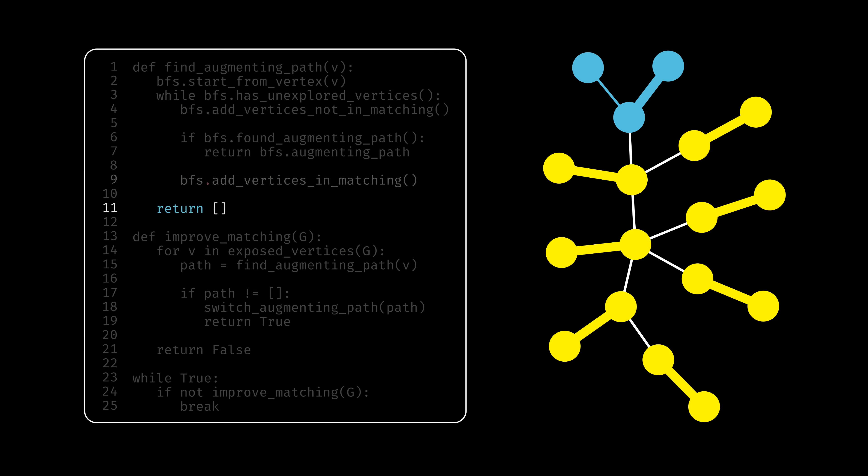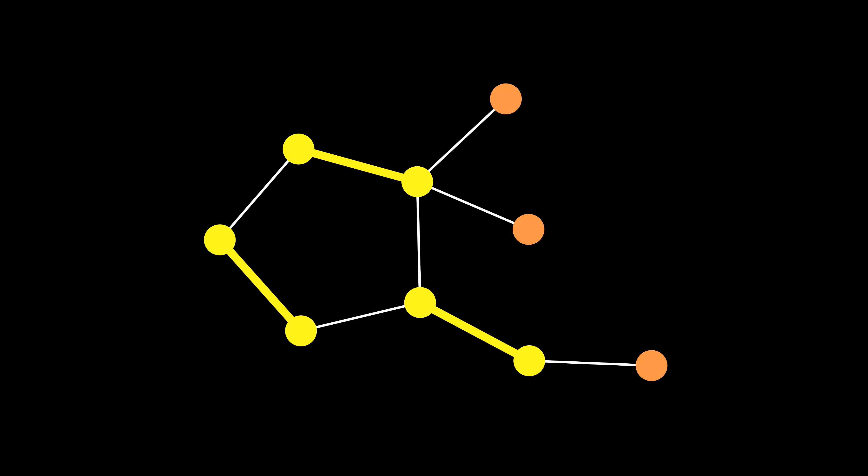So let's look at a graph our algorithm will not work on. Imagine we already found some matching that isn't yet maximum, and would like to improve it. Running the algorithm here wouldn't work, since the augmenting path is longer than the shortest path, and is therefore not found.